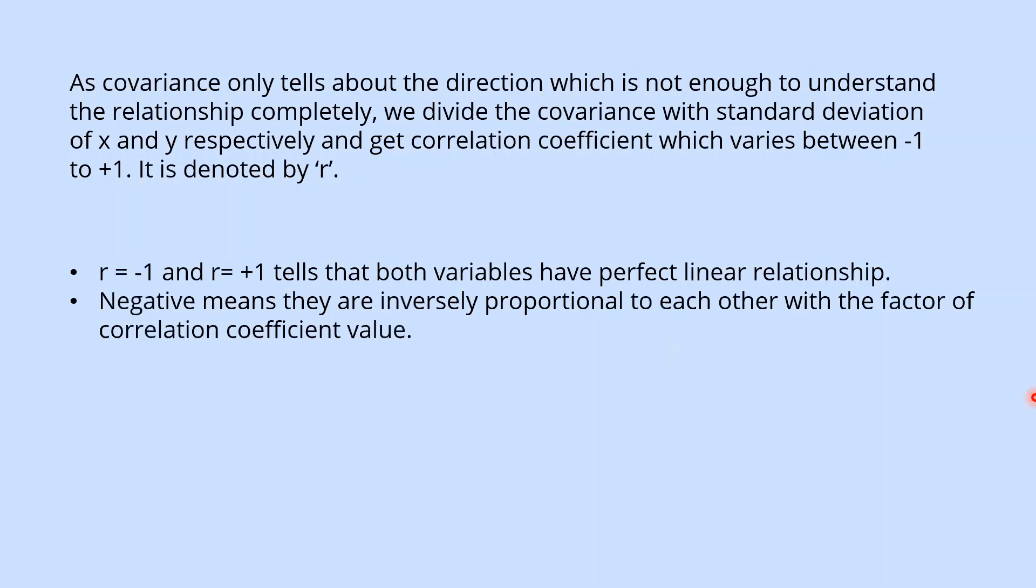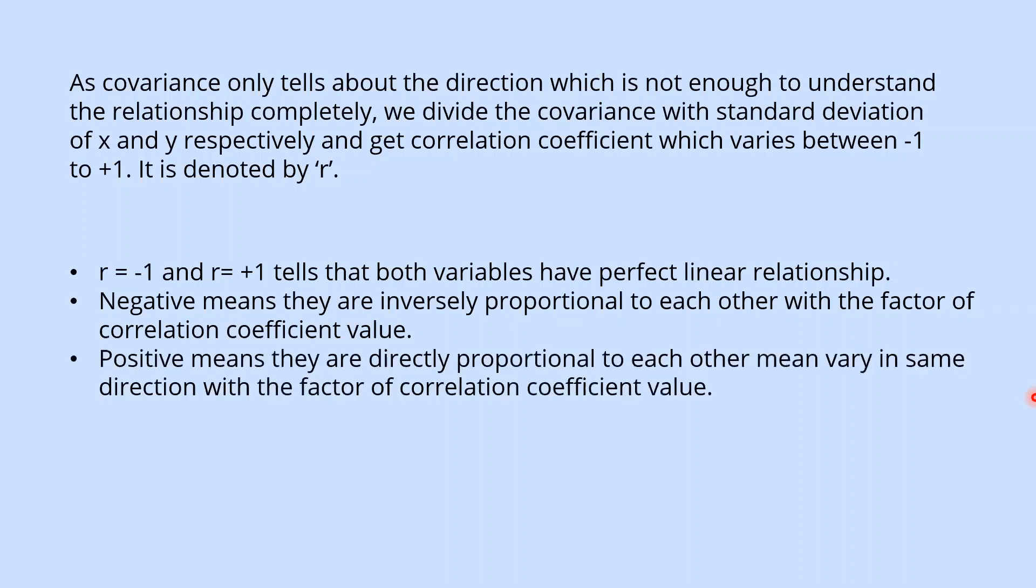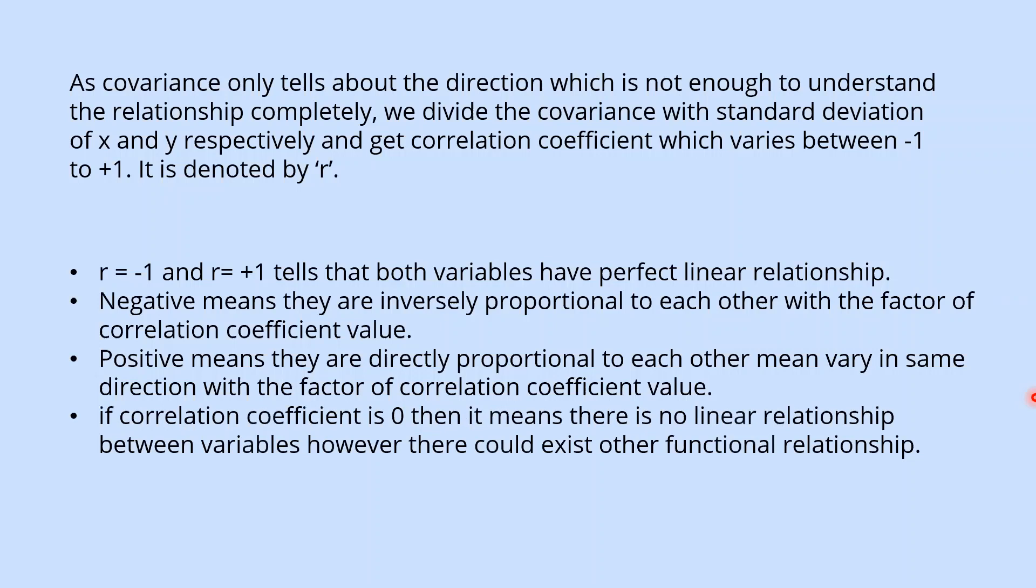Negative means they are inversely proportional to each other with the factor of correlation coefficient value. Positive means they are directly proportional to each other, meaning they vary in same direction with the factor of correlation coefficient value. If correlation coefficient is 0, then it means there is no linear relationship between variables.